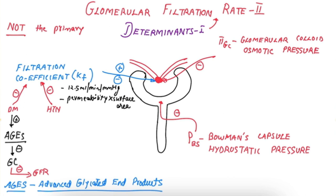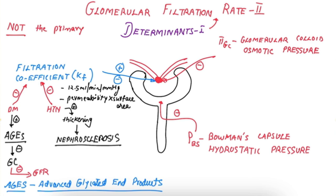Hypertension causes increased pressures that lead to thickening of the glomerular capillaries. This process is known as glomerular sclerosis or nephrosclerosis, and it again damages the glomerular capillaries and negatively affects the GFR.